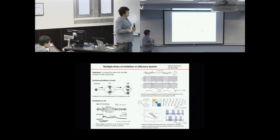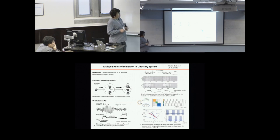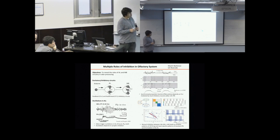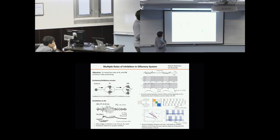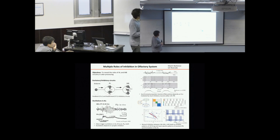When we started working on this, the first question we wanted to ask was to understand oscillations, which we first described in locusts and then in fly, moths, and honeybee. This is the first model we made showing that feedback inhibition from local neurons can generate oscillations. More recently, we looked at what could be the impact of inhibition between local neurons. This simple cartoon shows a few populations of inhibitory cells mutually inhibiting each other, which can create complex patterns of activity.